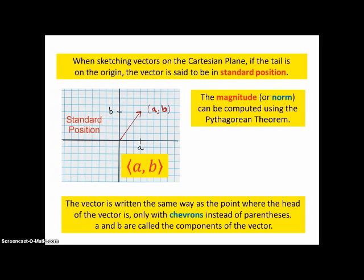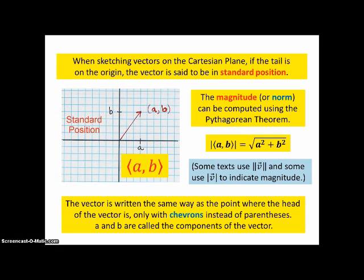The magnitude, or sometimes in some books called the norm of the vector, can be computed easily using the Pythagorean theorem. And the length, some books use the absolute value sign for length of a vector, and some books use a double absolute value sign to indicate the magnitude. I actually prefer the double, but I think your book uses the single.